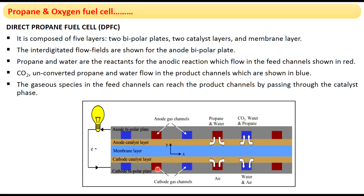At the cathode bipolar plate, the red-colored channels are inlets for passing air and the blue-colored channels are outlets for removing unreactive water and unreactive air. This completes the construction of the direct propane fuel cell.